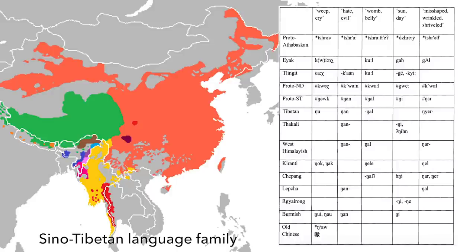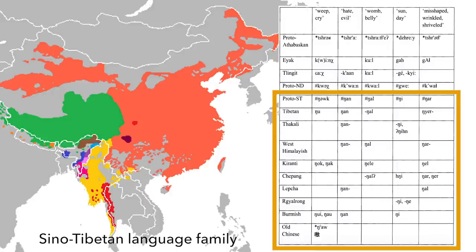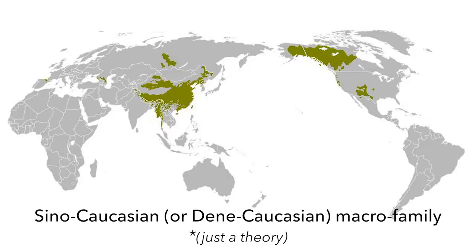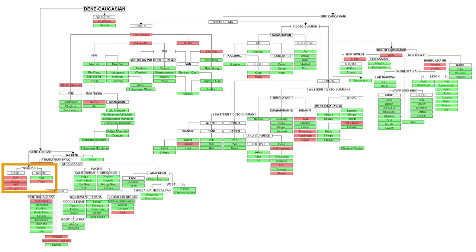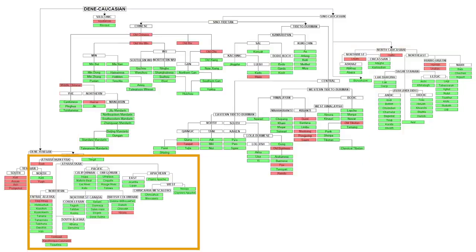Some other research has found correlations between Nadene and Sino-Tibetan languages. Finally, there is even a Sino-Caucasian macro family theory, which looks at the very big picture and claims there is a distant relationship between Basque, Northern Caucasus languages, Burushaski, Yeniseyan, Sino-Tibetan, and Nadene.